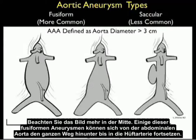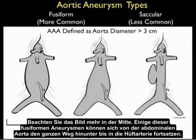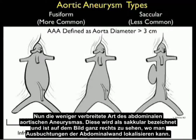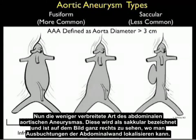Notice the picture towards the middle. Some of these fusiform aneurysms can extend from the abdominal aorta all the way down into the iliac artery. Now the less common type of abdominal aortic aneurysm, known as saccular, is shown in the picture to the far right, where you have a localized outpouching of the abdominal wall.